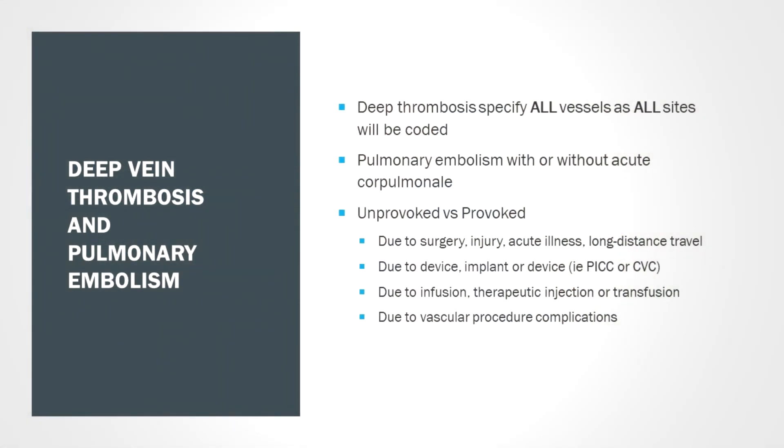In terms of VTE or venous thromboembolism: for DVT, we're decent at getting provoked versus unprovoked documented, and that should be standard. But the one I didn't know added complexity was specifying the veins involved — if more than one vein is involved in a DVT, you will add complexity by specifying those veins. Likewise for PE: whether it's saddle or sub-segmental gives the same kind of complexity on a coding level — even though clinically those are very different — but if there is acute cor pulmonale or acute right-sided heart failure related to the PE, that will add complexity, so documenting that is important.